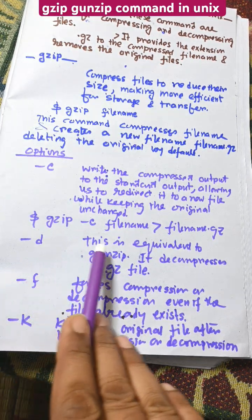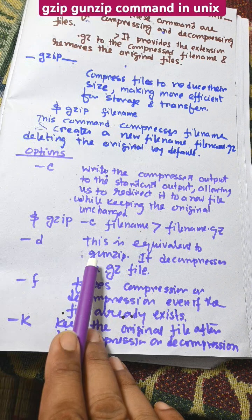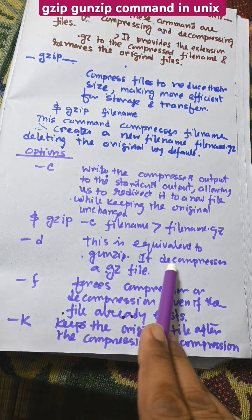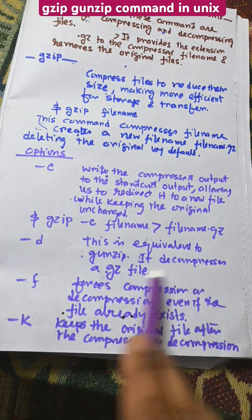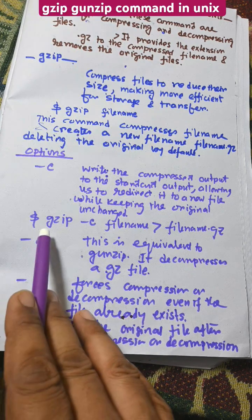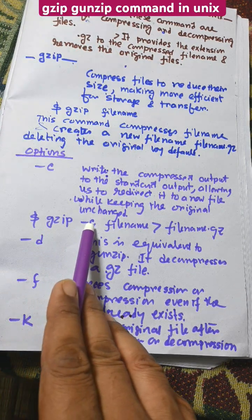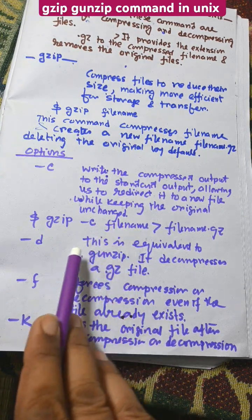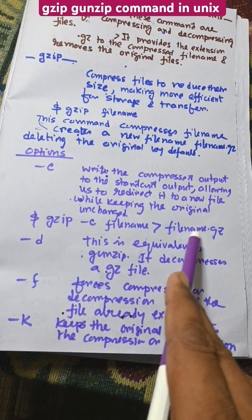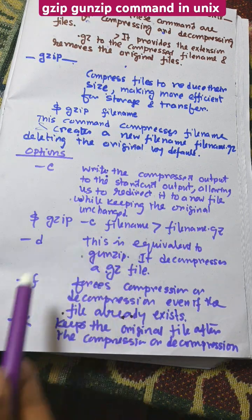Then there is `gzip -d`, which is equivalent to gunzip. It decompresses the .gz file — it will unzip the gzip file. When you use `gzip -d filename.gz`, it will decompress the file from filename.gz back to the original file name.